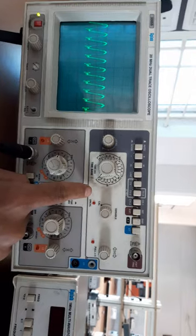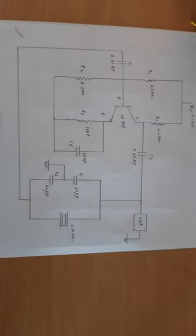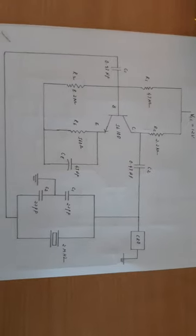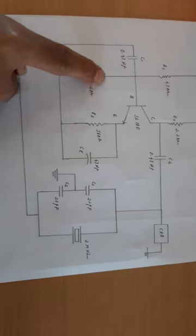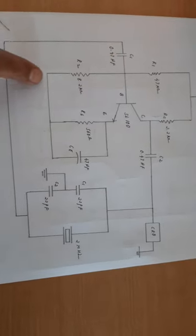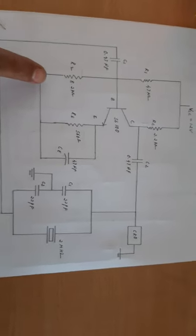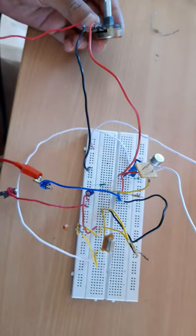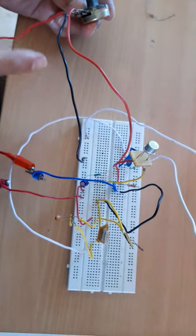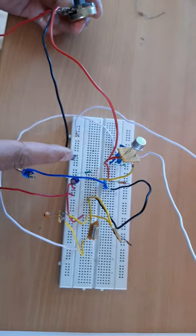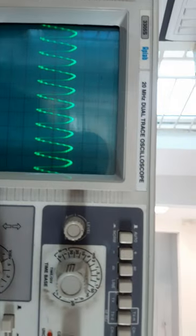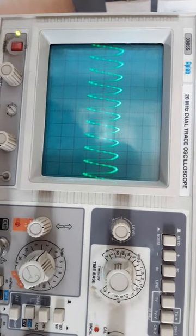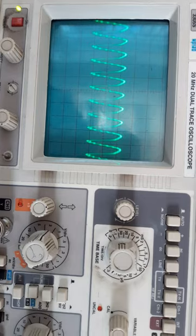One thing I want to mention: if you want to remove the noise or ripples and smoothen the sinusoidal wave, instead of the 8.2 kilohm fixed resistor you can use a 10 kilohm pot between the base and ground, and tune it to get a smoother sinusoidal wave. Now I have used a 10 kilohm pot between base and ground — if I tune this, I will be getting a much smoother waveform compared to the 8.2 kilohm fixed value used earlier. Thank you.